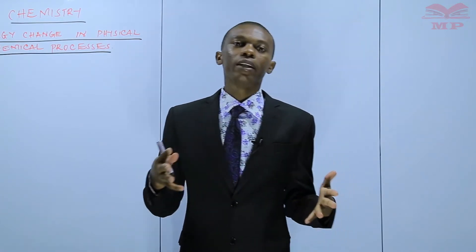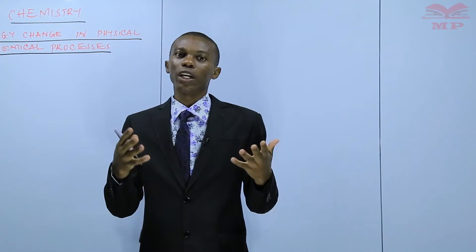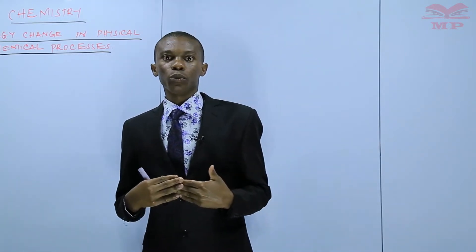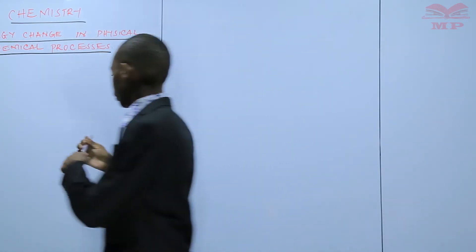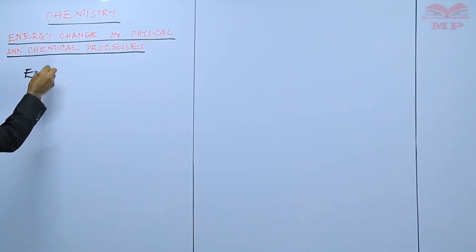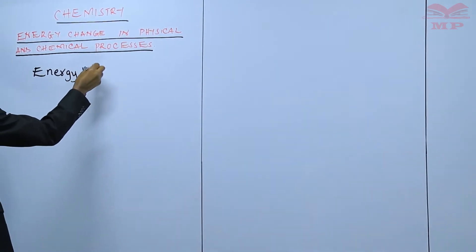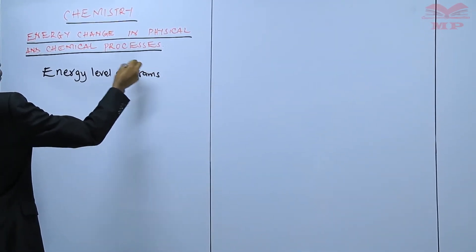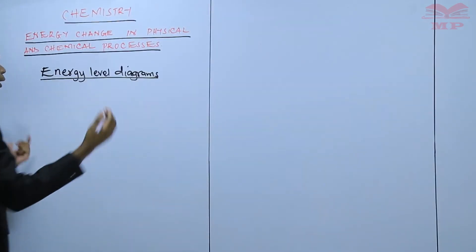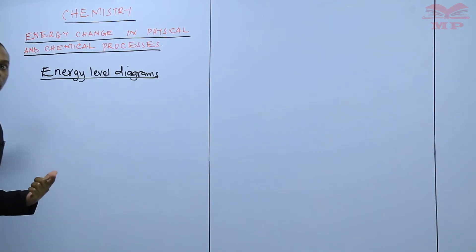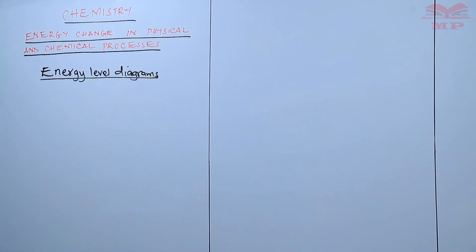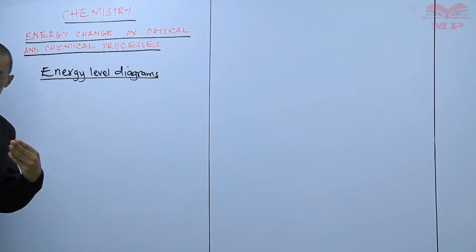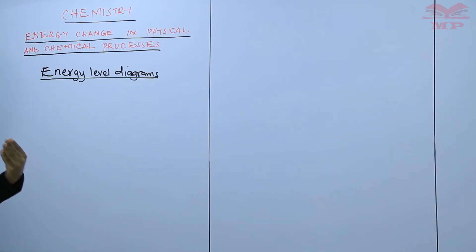You should be able to define exothermic and endothermic reactions. In today's lesson, I want us to discuss energy level diagrams. We are going to start with endothermic reactions first, then later discuss exothermic reactions. By the end of this lesson, you should be able to draw an energy level diagram to illustrate an endothermic reaction.